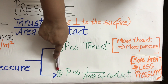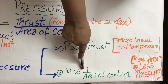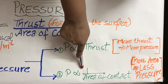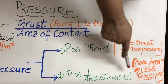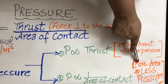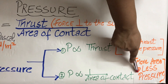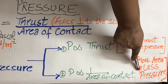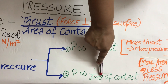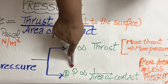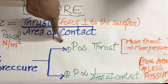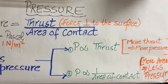The second factor is that pressure is inversely proportional to the area of contact. Inversely proportional means if the area of contact is more, less pressure is exerted. If less area of contact, more pressure is exerted. Let us study these two factors with the help of an activity.